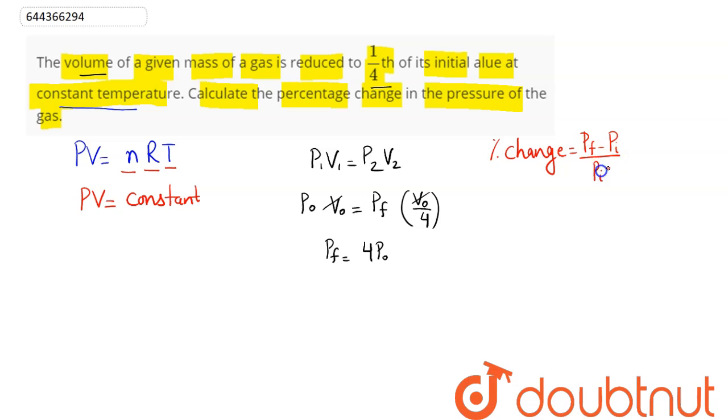So final pressure is 4P₀, initial pressure is P₀. (4P₀ - P₀)/P₀ × 100% = 3P₀/P₀ × 100% = 3 × 100%. Hence we can say percentage change in the pressure is 300%.